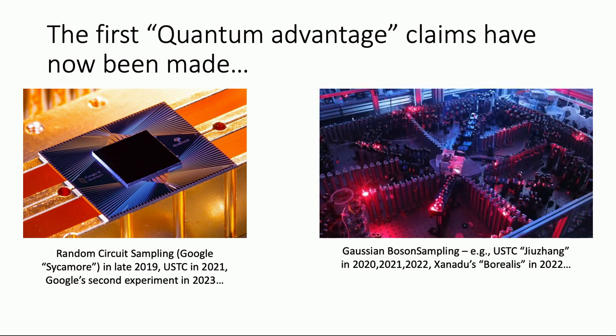Separately, there's a second proposal for quantum advantage, originally proposed by Aaronson and Arkhipov, called the Gaussian Boson Sampling proposal. This has now been implemented several times by a group at USTC. There's also a Canadian company called Xanadu which implemented Gaussian Boson Sampling in 2022. The point is there are a whole lot of these experiments and they're getting better.